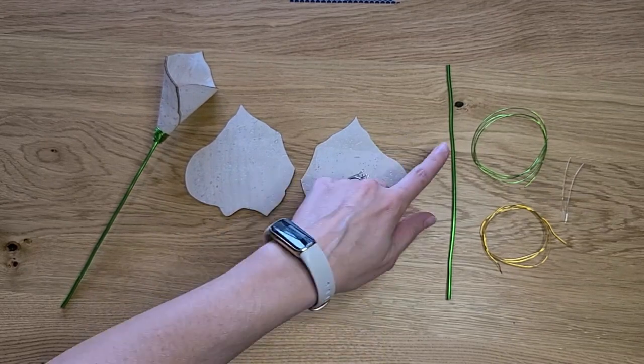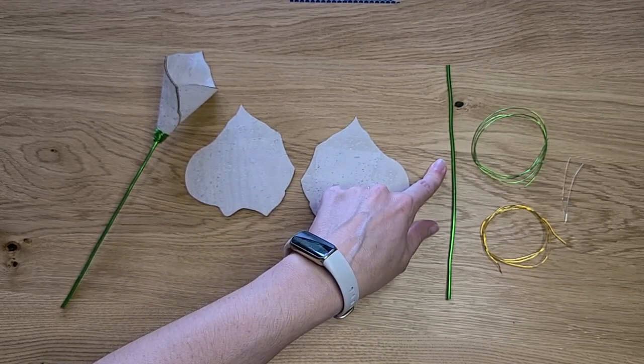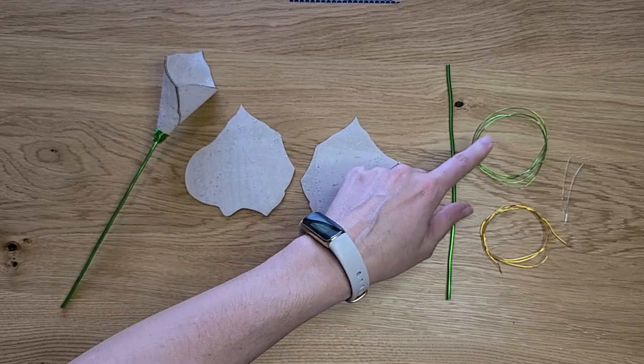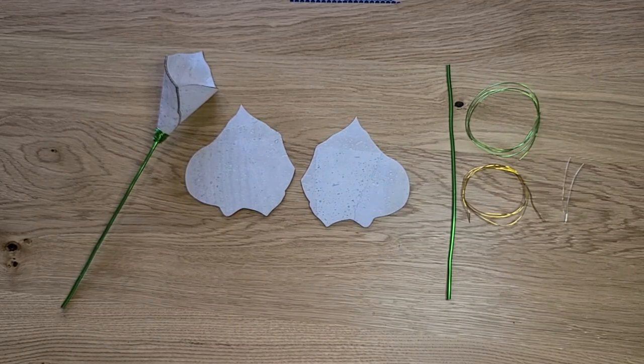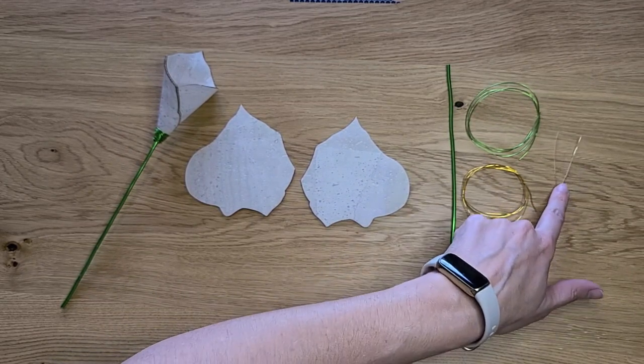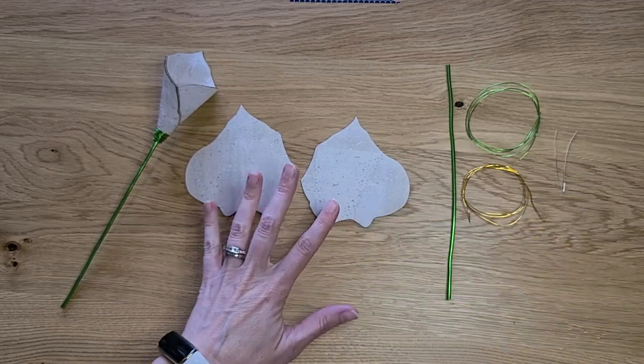You will also have a three millimeter wire, two lengths one in green one in yellow of 22 gauge wire, and then you'll have two small pieces of silver wire that will help support the petals.